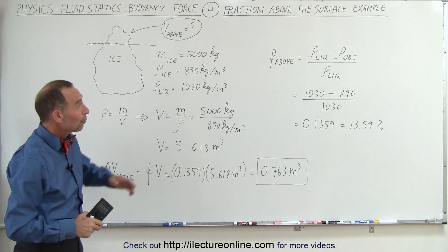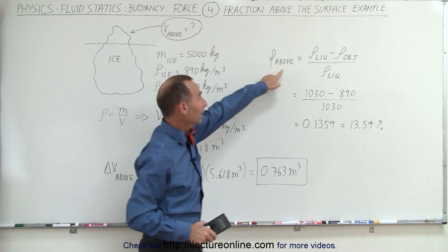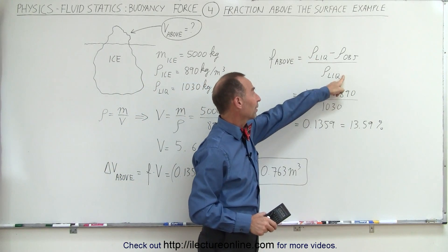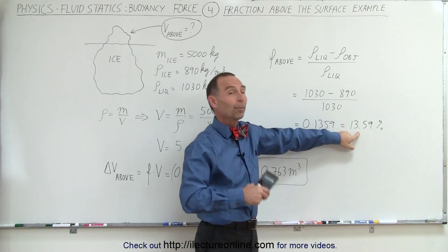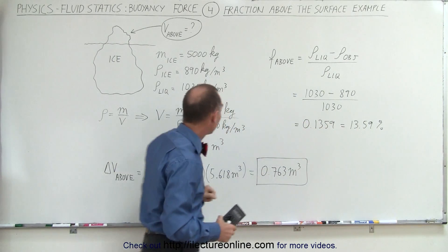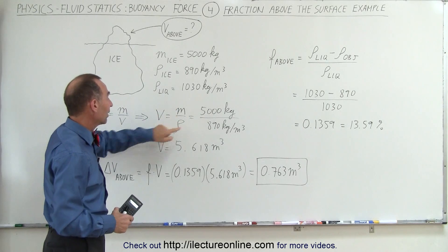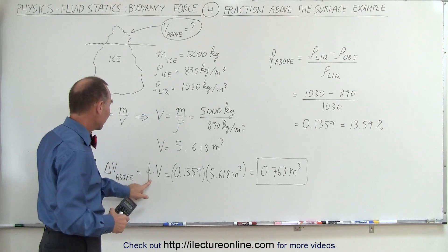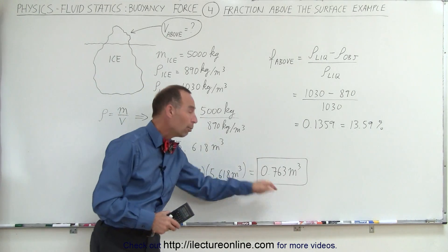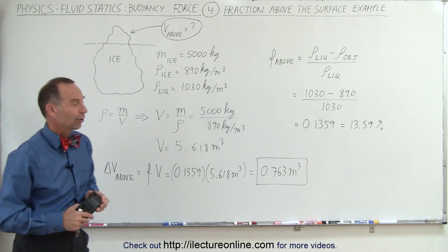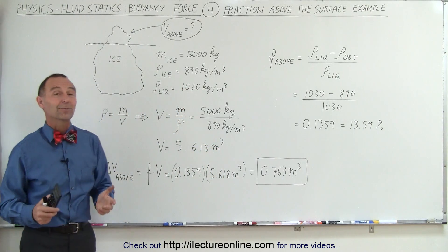That's how it's done. We find the fraction above the surface by taking the difference of the densities divided by the density of the liquid. That gives us a percentage or decimal. Then we find the volume of the iceberg by taking mass divided by density, and multiply the fraction times the volume to get the portion above the surface of the liquid.